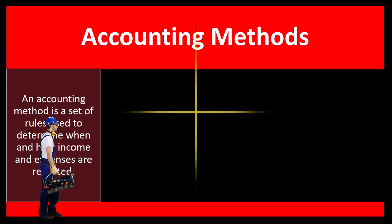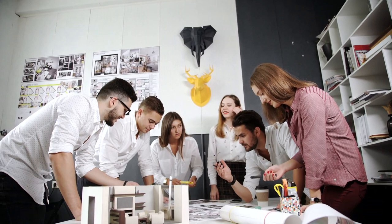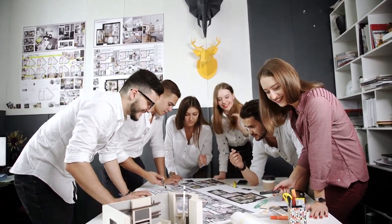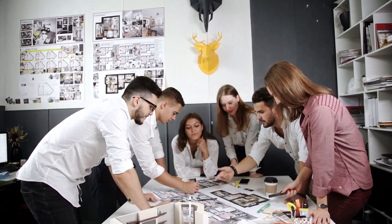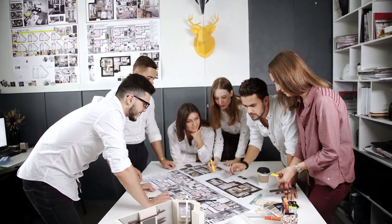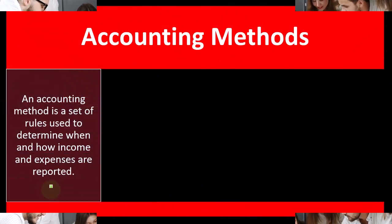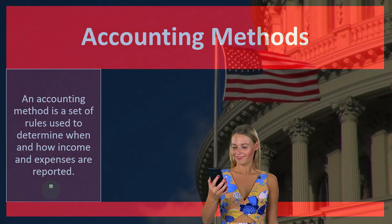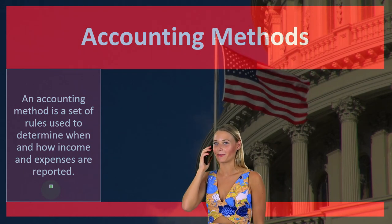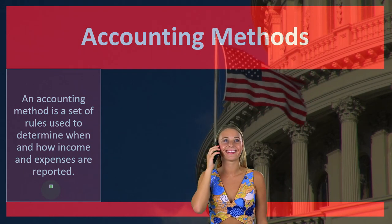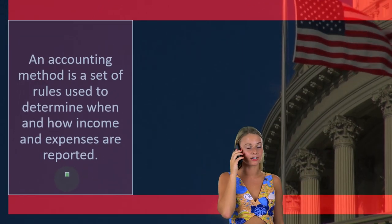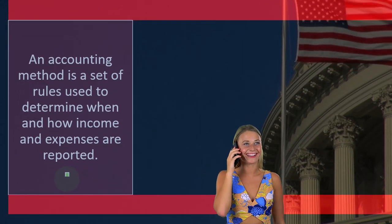It's important to get the accounting method correct the first time, because the IRS is going to be skeptical of us changing accounting methods. It may be possible to change, but we might have to request a change in accounting method. The IRS is skeptical because you can manipulate the cutoff dates and manipulate your tax bills if you were able to constantly change from, say, an accrual method to a cash-based method.